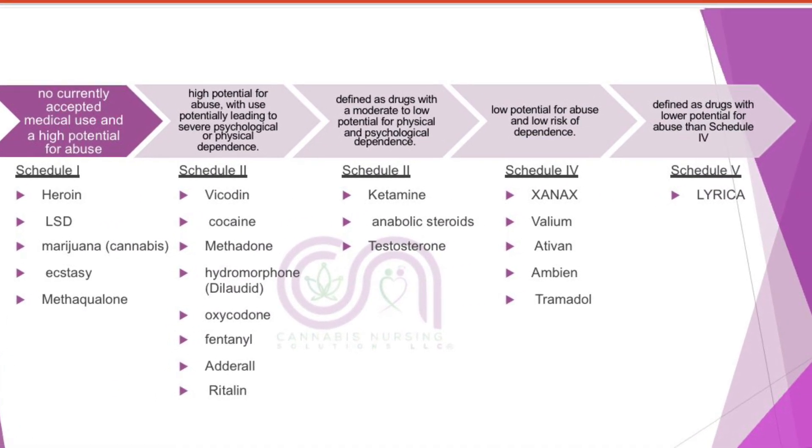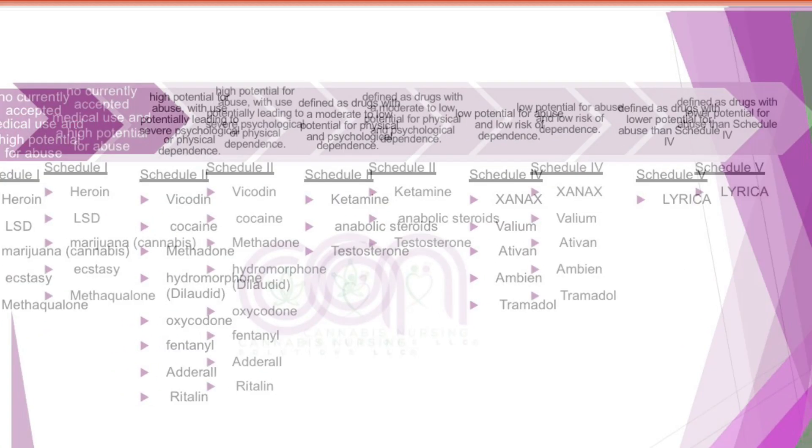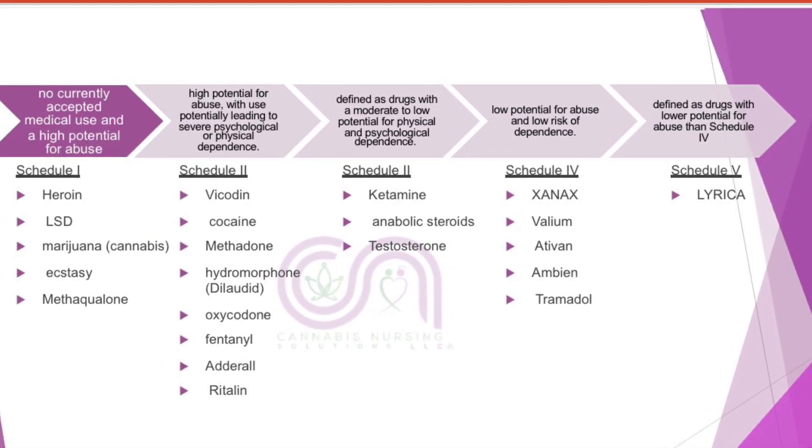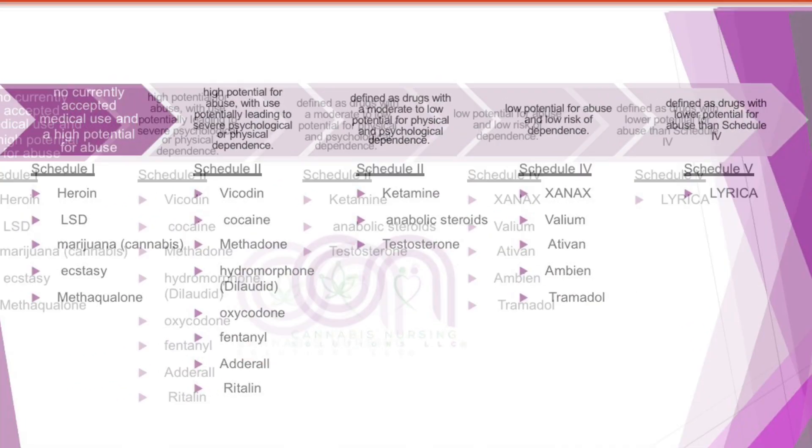We also have Schedule 3 drugs, Schedule 4 like Xanax, Valium, Ativan, and Schedule 5 — Lyrica falls under that. All drugs from Schedule 2 and below are things we administer in the hospital, and we've all seen the effects. Take Dilaudid — we've seen a patient addicted to it, calling you at exactly one hour and fifty-nine minutes when their PRN schedule says two to four hours. Those drugs have their place and serve a purpose, but all drugs have pros, cons, and side effects.